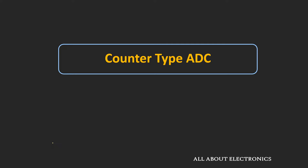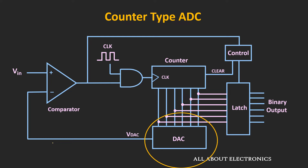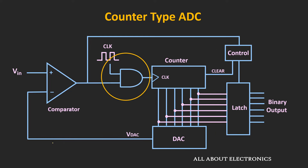This Counter-Type ADC is a very simple type of ADC. The reason it is known as the Counter-Type ADC is because it uses the binary counter for the conversion. Apart from the binary counter, it consists of the comparator, the digital to analog converter, the control circuit, the AND gate, and the latches.